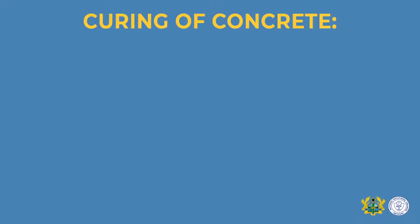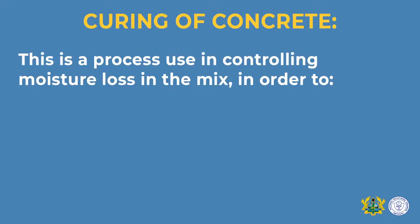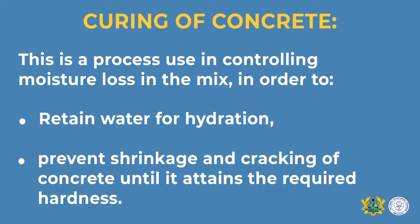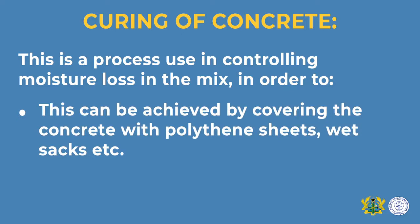The last process is curing of the concrete, used to control moisture loss in the mix. It is done to retain water in the concrete, preventing the concrete from cracking or shrinking until it attains its required strength. Curing is done by covering the concrete with materials such as polythene sheet, wet sack, or wet sand, to prevent exposure to weather and retain the required amount of water until maximum strength is achieved.